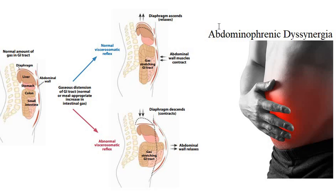So in the first video we were talking about SIBO. Now we are focusing on abdominophrenic dysnergia and we will draw a conclusion about the difference between the two. Looking at the first picture — in the first video we were talking about stomach, colon, and small intestine. SIBO is the bacteria that overgrows in the small intestine.